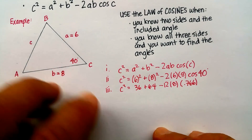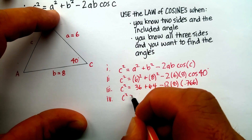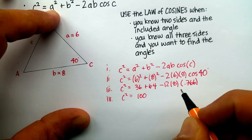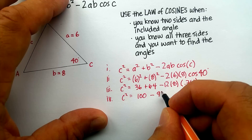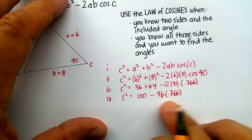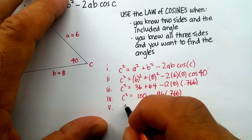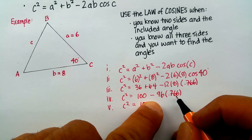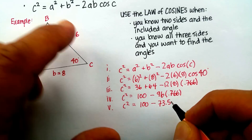Continuing, and remember to follow PEMDAS: c squared equals 36 plus 64 minus 96 times 0.766. I have to multiply first, so 96 times 0.766 equals approximately 73.5.